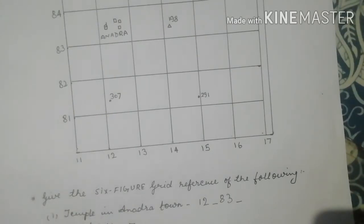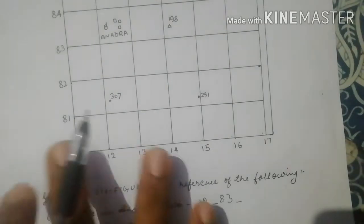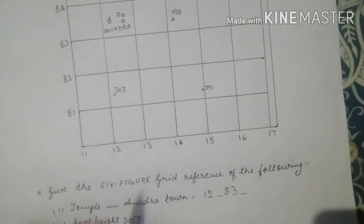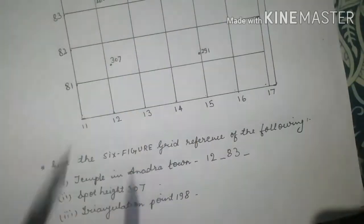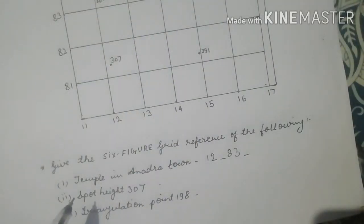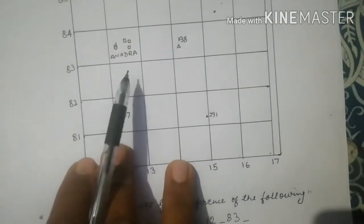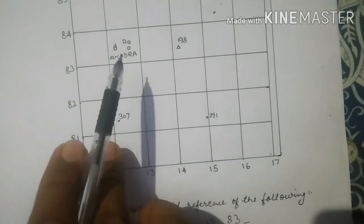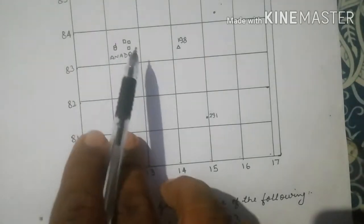Let me tell you once again how to find out four-figure. This time I'm making it very easy for you. The first question says give the six-figure grid reference of this temple. The temple lies here. You need to find out which two vertical lines are actually making a square.